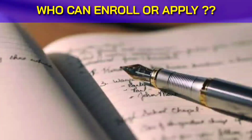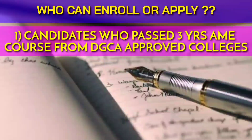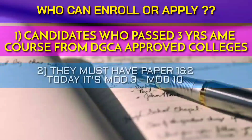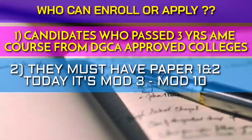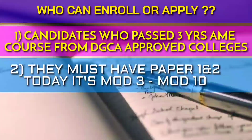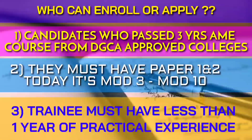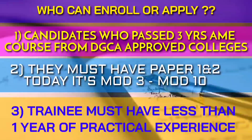Who can enroll in this? Candidates who have passed a 3-year AME training course from a DGCA approved institute. Also, they must have Paper 1 and Paper 2, which today is all basic modules from Module 3 to Module 10, whether you are B1 or B2. Most importantly, the trainee must have less than 1 year of practical experience, and OJT does not count as experience — remember this.